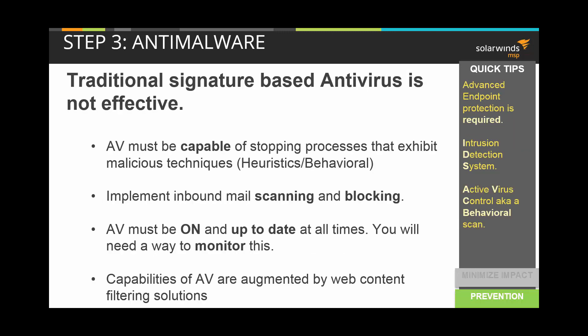Step 3: Traditional signature-based AV is often not enough — don't put all of your eggs in one basket. Invest in anti-malware alongside traditional AV, or use a solution that offers both. AV must be able to stop processes that are acting maliciously. Enforce inbound mail scanning and blocking. AV must be on all the time with no ability to be disabled by the end user, and updates should happen automatically and frequently in the background. Look to web content filtering solutions as an additional tool to increase effectiveness.